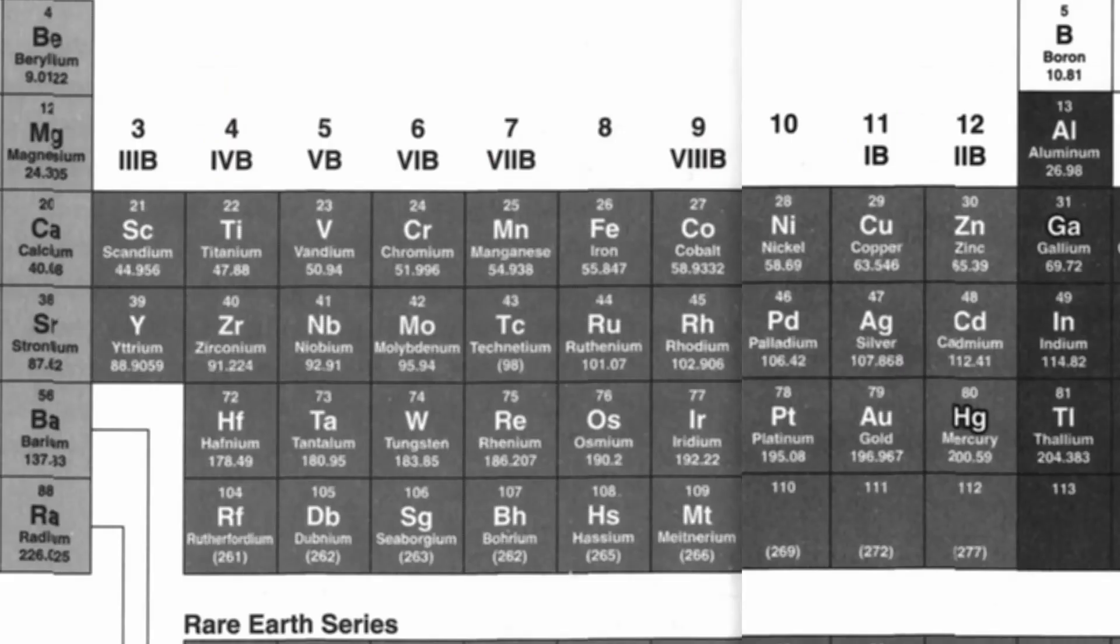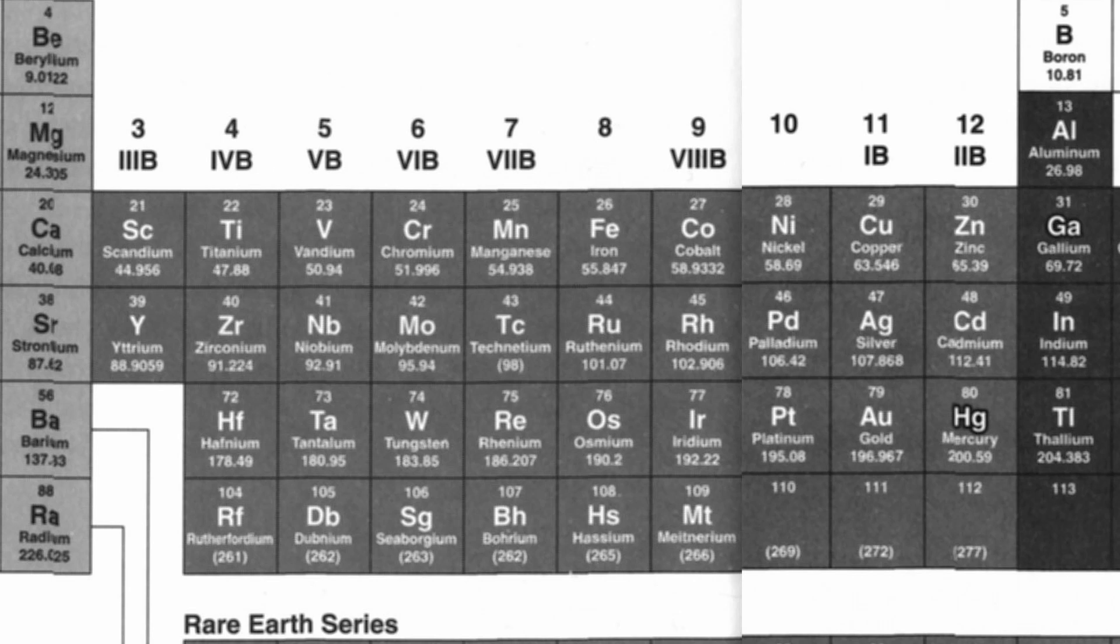Groups three to twelve are called the transitions. Very different, come in various additions. Many ion charges, they do contain. Different colors are differently retained.